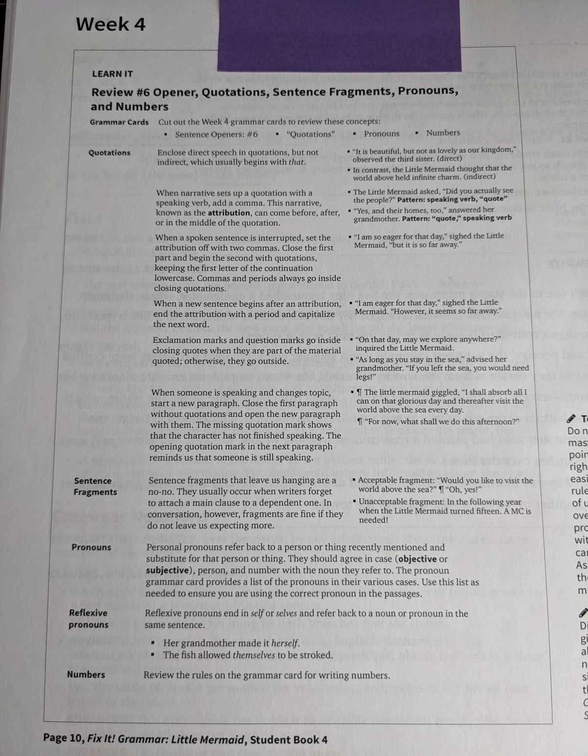Let me read you what the book says. I am going to sit to do this. Quotations. Enclose direct speech in quotations, but not indirect, which usually begins with that. It is beautiful, but not as lovely as our kingdom. Observe the third sister. Open quote. It is beautiful, comma, but not as lovely as our kingdom. Comma. Close quotes. Observe the third sister. Period. In contrast, the little mermaid thought that the world above held infinite charm. That's an indirect quote. It's what she thought. She's not thinking, the world above holds infinite charm. She thought that, therefore, no quotes.